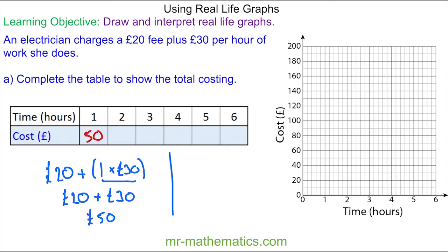For two hours work, again we pay the call out charge which is £20, plus now two lots of 30, which is the hourly charge. So 20 plus 60 is £80.